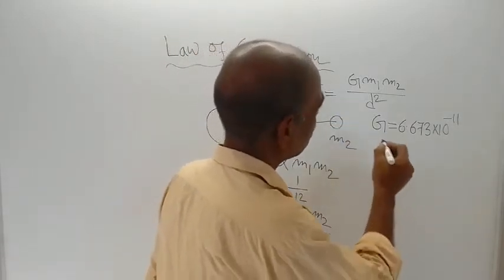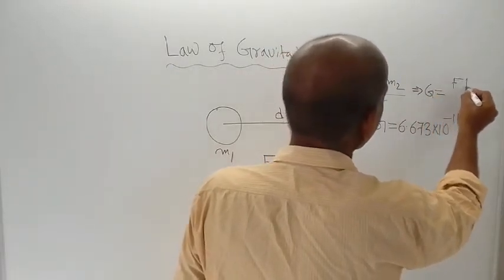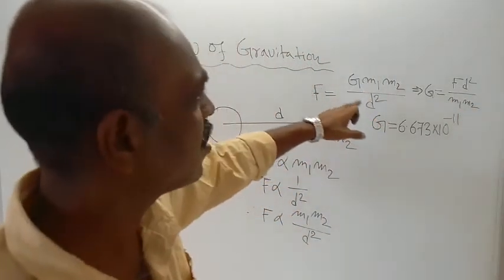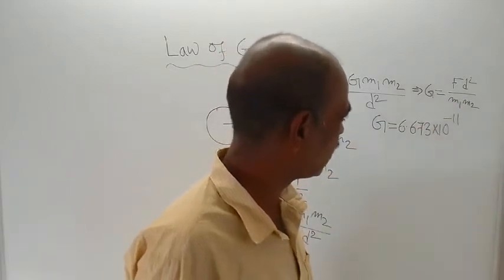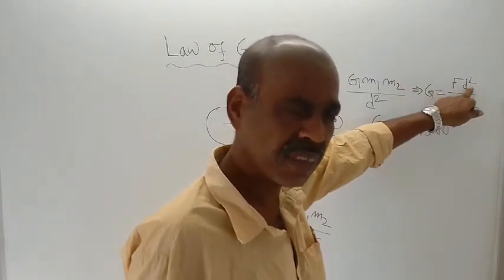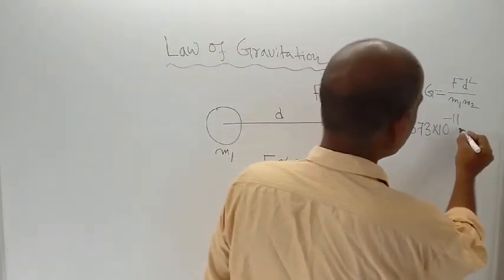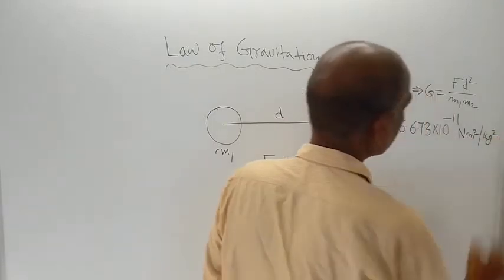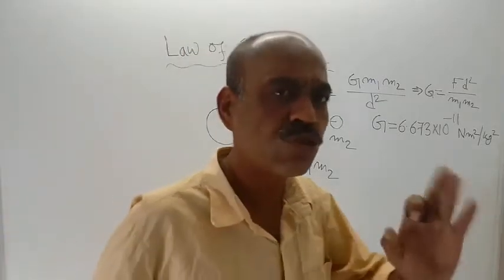To find the unit of G, we rearrange: G equals F times D squared divided by M1 times M2. The unit of F is Newton, unit of D is meter, and unit of M is kg. Therefore, the unit of G is Newton meter squared per kg squared, or equivalently Newton meter squared times kg to the power minus 2.